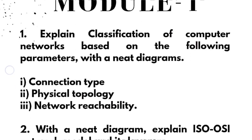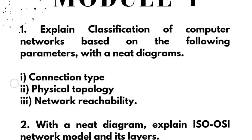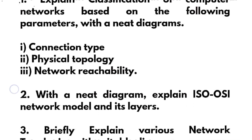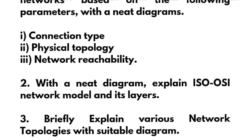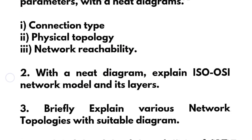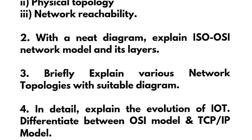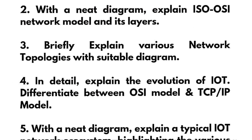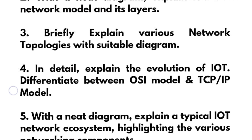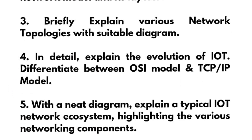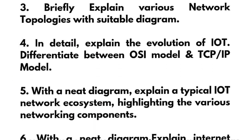Let's discuss module-wise questions. In Module 1, we have: explain classification of computer networks based on connection type, physical topology, and network reachability with neat diagrams; explain the ISO OSI network model and its layers; and briefly explain various network topologies with suitable diagrams. Next, explain in detail the evolution of IoT.